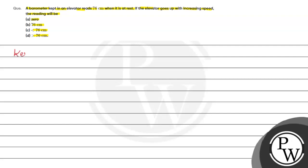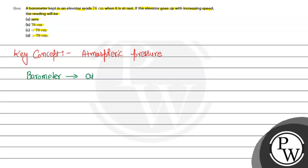First of all, we will discuss the key concept, and here the key concept is atmospheric pressure. We have a barometer kept in an elevator. A barometer is a device used to measure air pressure. Here, when the lift is at rest, in that particular case, it is measuring 76 cm of Hg.